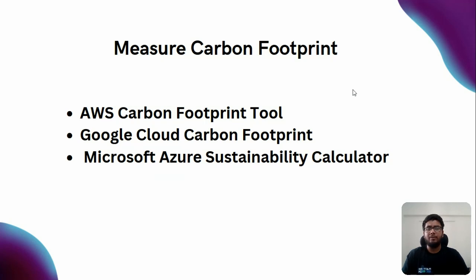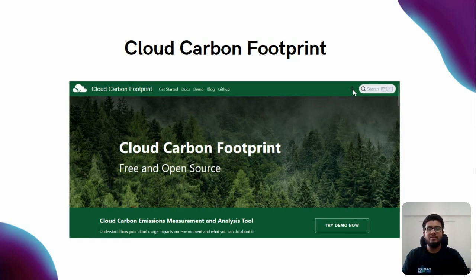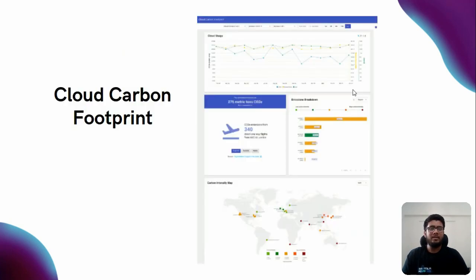Some of the major cloud providers also have tools to directly measure the carbon footprint your resources are utilizing. For AWS, you have the AWS Carbon Footprint Tool. For Google, there is Google Carbon Footprint. For Microsoft Azure, there is the Azure Sustainability Calculator. Most cloud providers are helping to reduce carbon as it will eventually help to make a better environment. Another great option is Cloud Carbon Footprint — an open-source and free tool where you can make dashboards for free. You just sign up, make a dashboard, and visualize how your product and services are utilizing energy and emitting carbon.